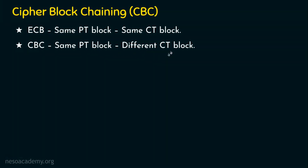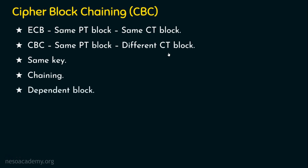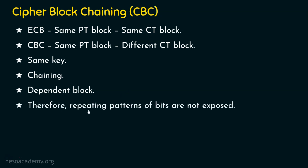How is that possible? Are we going to change the key? No, we are not going to change the key. The same key is used for the entire encryption process even in CBC. Different ciphertexts are generated because we are introducing a concept called chaining — we are going to link the blocks. When we bring in chaining, we will be having dependent blocks. In ECB, we had independent blocks, whereas here we will have dependent blocks. Since the blocks are dependent, these repeating patterns of bits are not exposed.